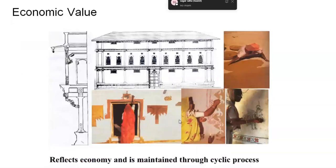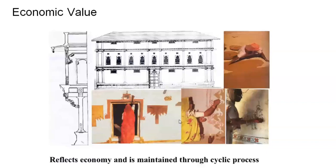Going on from here, another thing very much inbuilt into vernacular is the economic value. Economy is reflected in the permanency of the material and the kind of houses built, but it is also integral to tradition. Every Diwali the house has to be cleaned, repaired, made ready. Maintenance is a cyclic process inbuilt into our culture, and that saves a lot of money towards larger collapses. The continuity of the house is ensured through its cyclic process of maintenance.